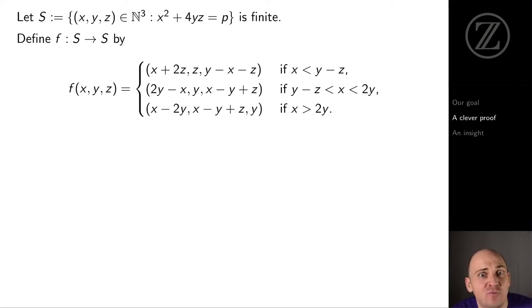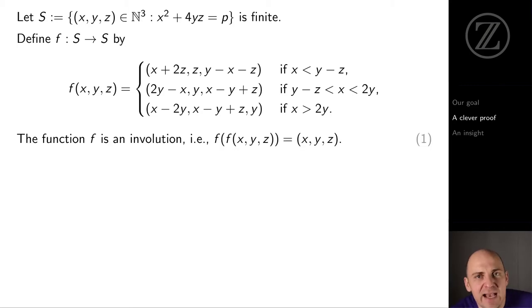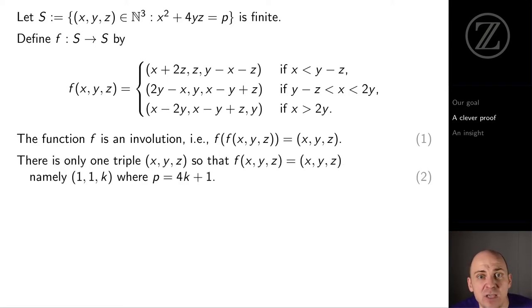Now, where did this function f come from? It's so mysterious. In any case, if you bash it out, you'll find that f of f of (x, y, z) equals (x, y, z). And when a function composed with itself is the identity like this, we call the function an involution. You can think of it as being a pairing up function, which sends an element to its partner and sends the partner back to that element. So everybody pairs up, except that there's exactly one triple which pairs with itself. Its partner is itself. This is the triple (1, 1, k).